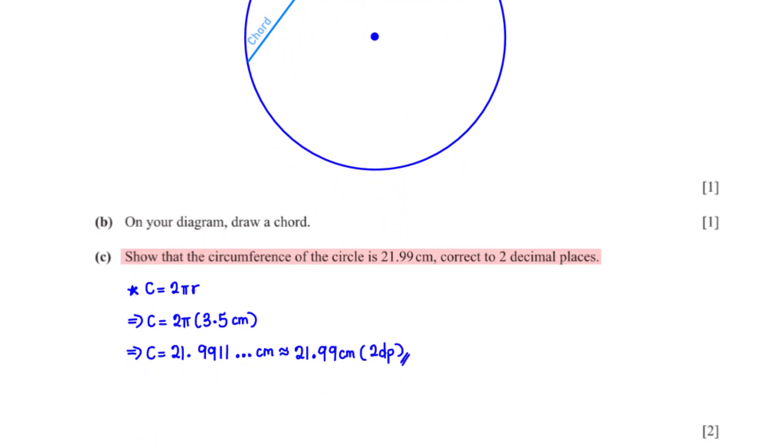Show that the circumference of the circle is 21.99 centimeters correct to two decimal places. Here is the formula for the circumference of a circle. The radius r of the circle is 3.5 centimeters. When we type this into the calculator, this is what we get which is approximately 21.99 centimeters rounded to two decimal places.